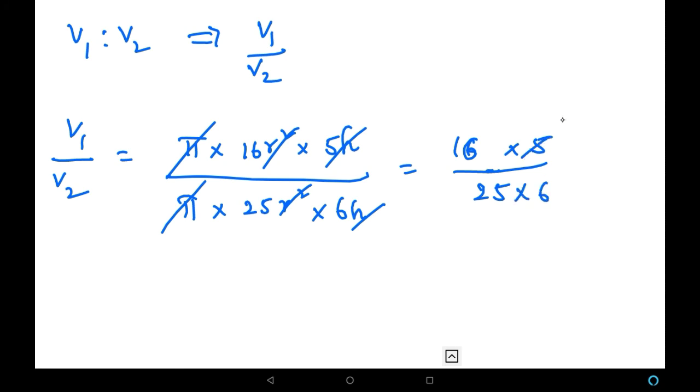Now see, this 5 once in this 25 gets cancelled with 5, that will be 5. And then 6 and 16 gets cancelled with 2 table, that will be 8 here and 3 here. Now what is remaining? 8 by 5 into 3, which is nothing but 8 by 15. So we have got the value 8 by 15.